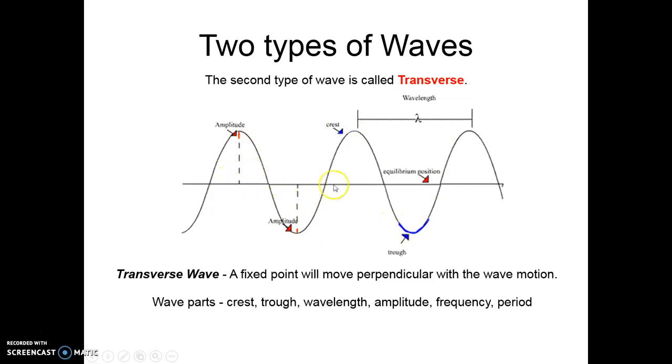So we've got our crests up at the top of our waves, our troughs on the bottom. The amplitude is from this equilibrium position, so this is like the center of our graph. Usually, in an Algebra 2 problem, this would be our x-axis. So just that distance from the x-axis up to the crest, or the equilibrium position down to the trough, is my amplitude.